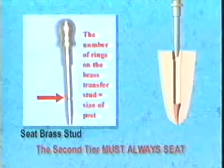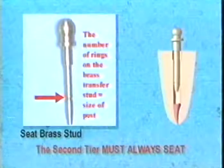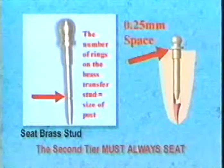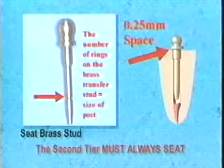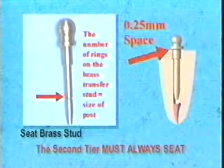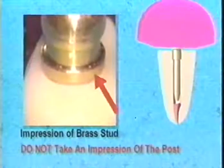Replace the post with the corresponding size brass transfer stud. By design, an approximate 0.25 millimeter space will occur by placing the stud in the prepared post hole, as a result of a 0.25 millimeter space between the flange of the stud and the prepared post hole. Therefore, it is important to use the correct corresponding brass transfer stud. After achieving proper post seating, take an impression of the stud in the preparation. Remove the impression with the brass transfer stud and temporarily seal the canal.